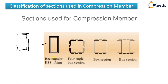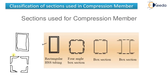The second type is the four angle box section. You have four angle sections arranged together — two on one side and two on the other — and they are connected using cover plates. These can be joined either by bolts or welds, forming what is known as the four angle box section.